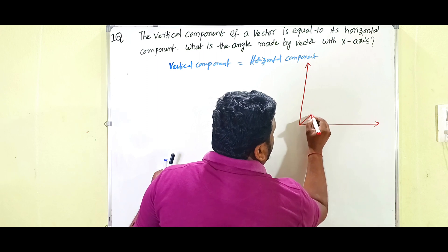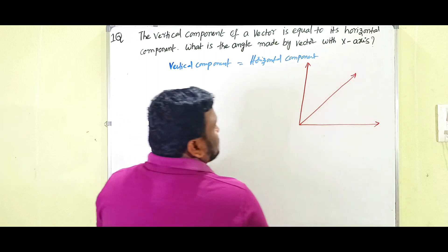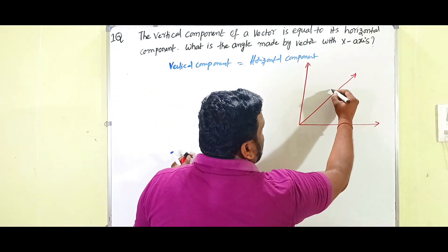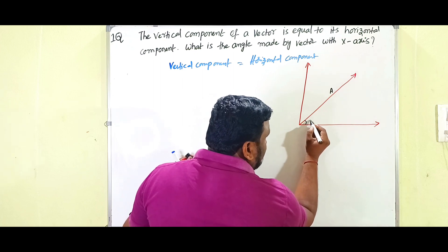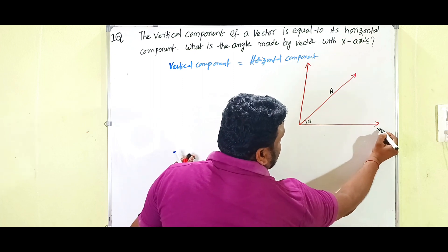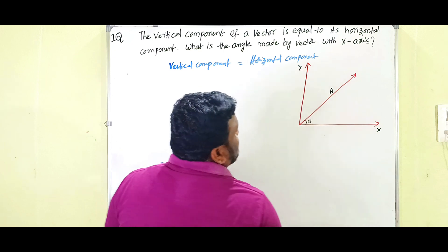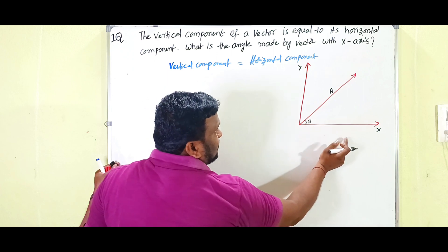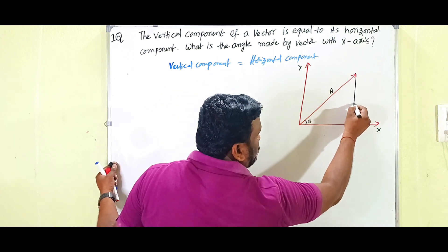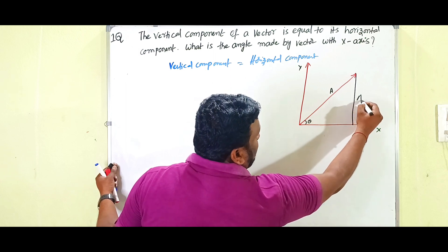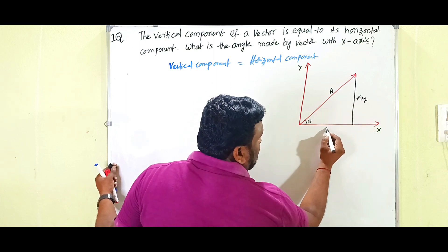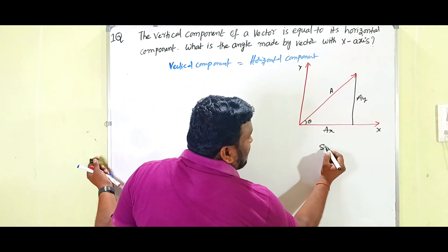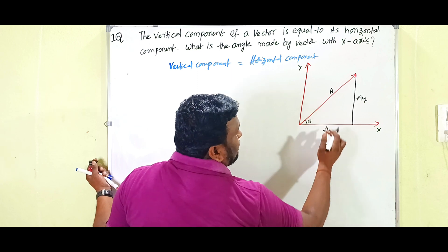As we already discussed in the case of resolution of vectors: here is vector A making some angle theta with the x-axis. This is the x-axis and this is the y-axis. The vector A is given two components — the vertical component A_y and the horizontal component A_x.